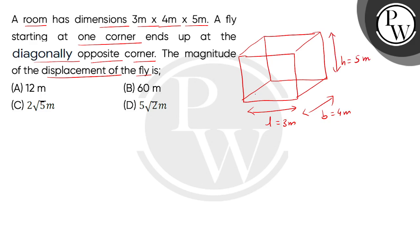The fly starts at one corner and ends at the diagonally opposite corner. Let's consider the body diagonal. We'll represent this body diagonal as AB.